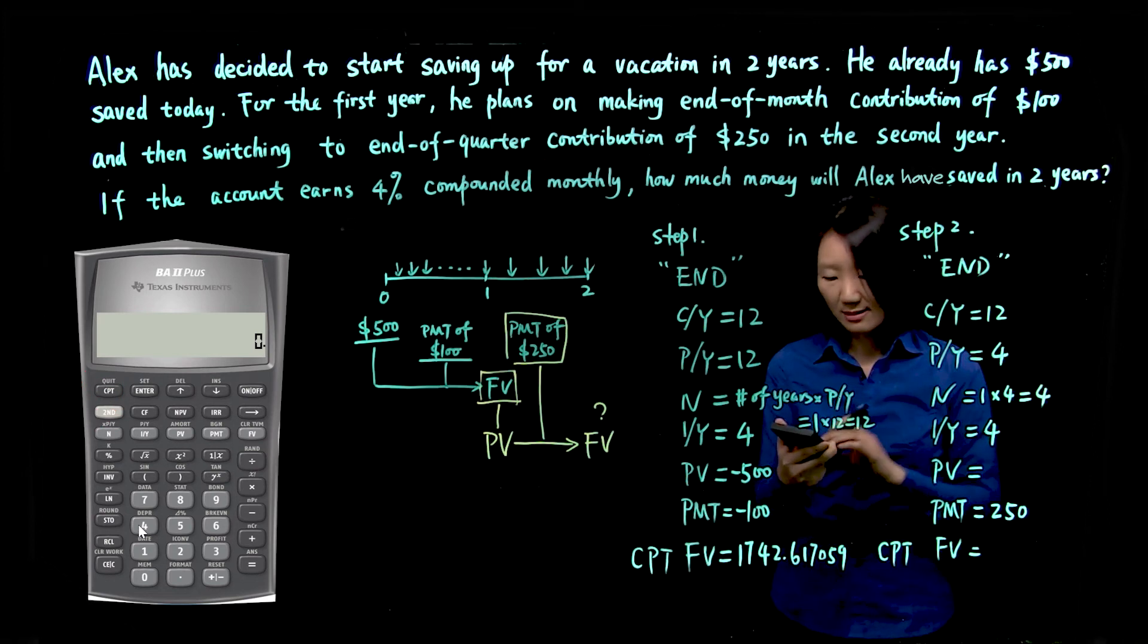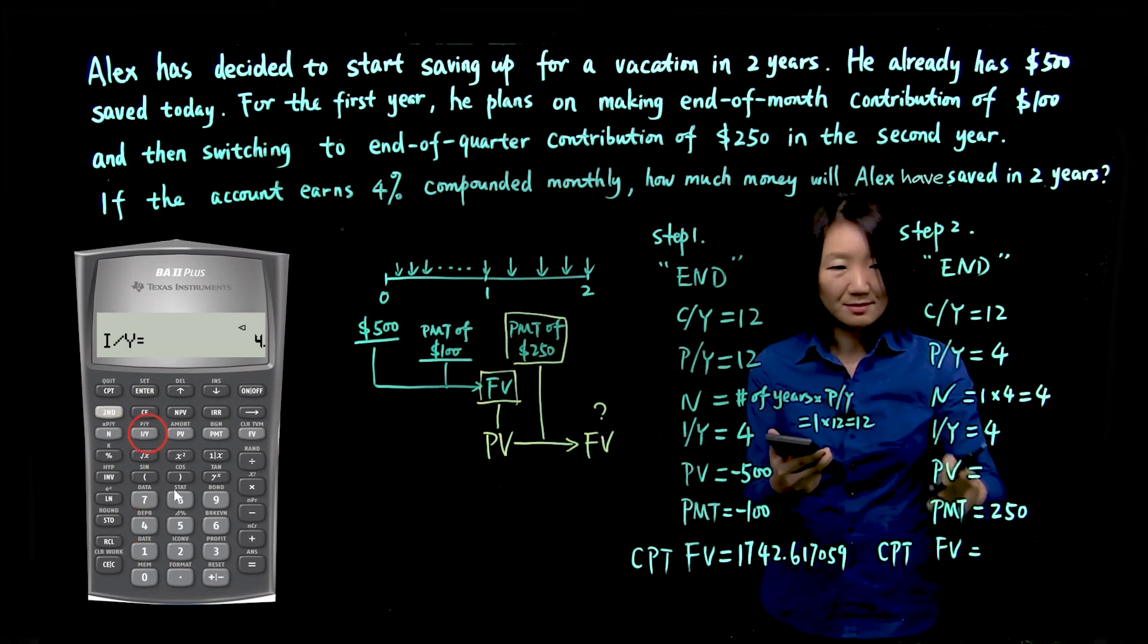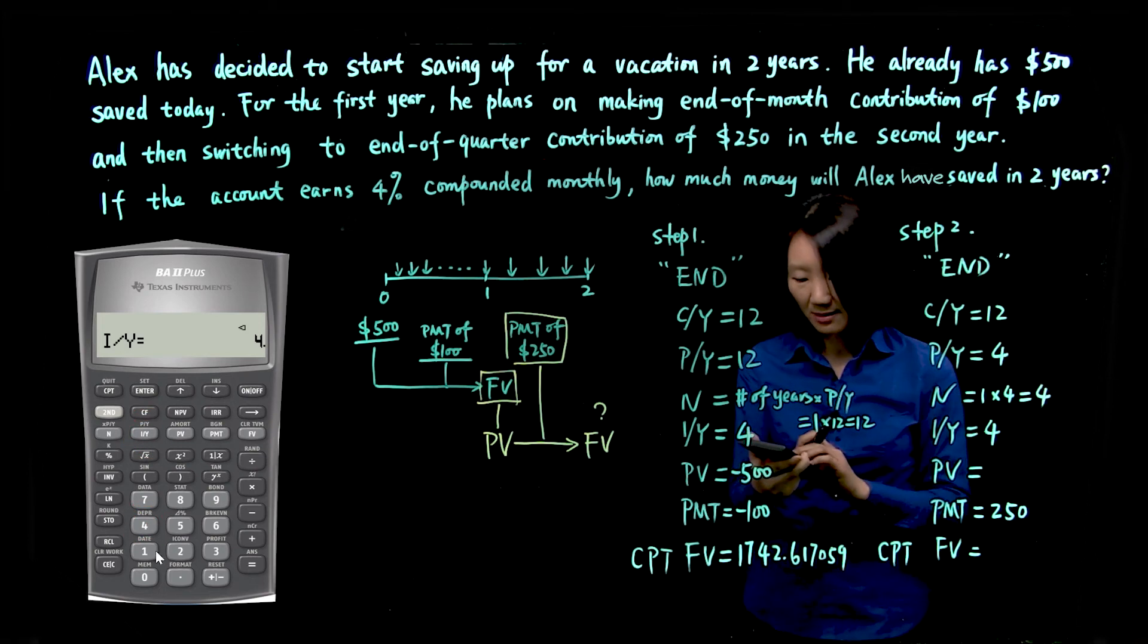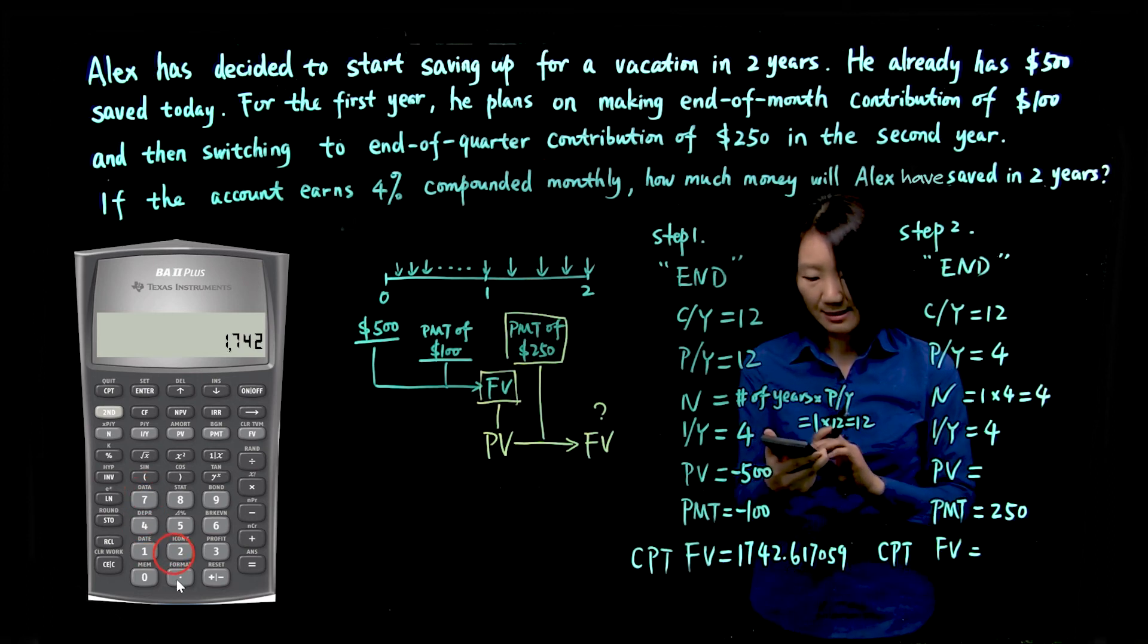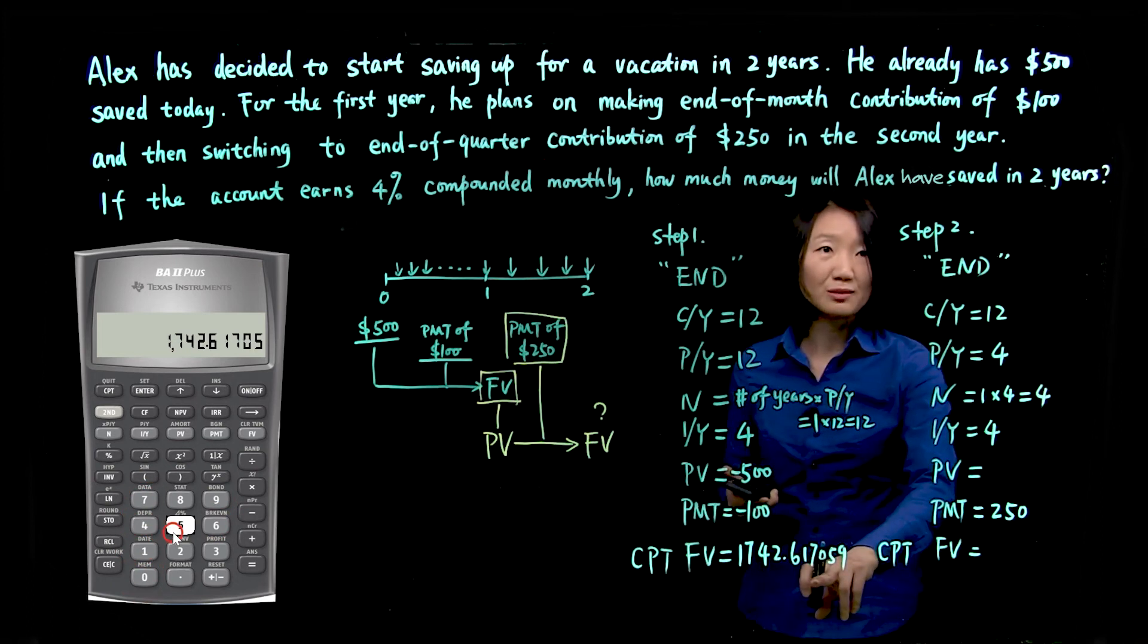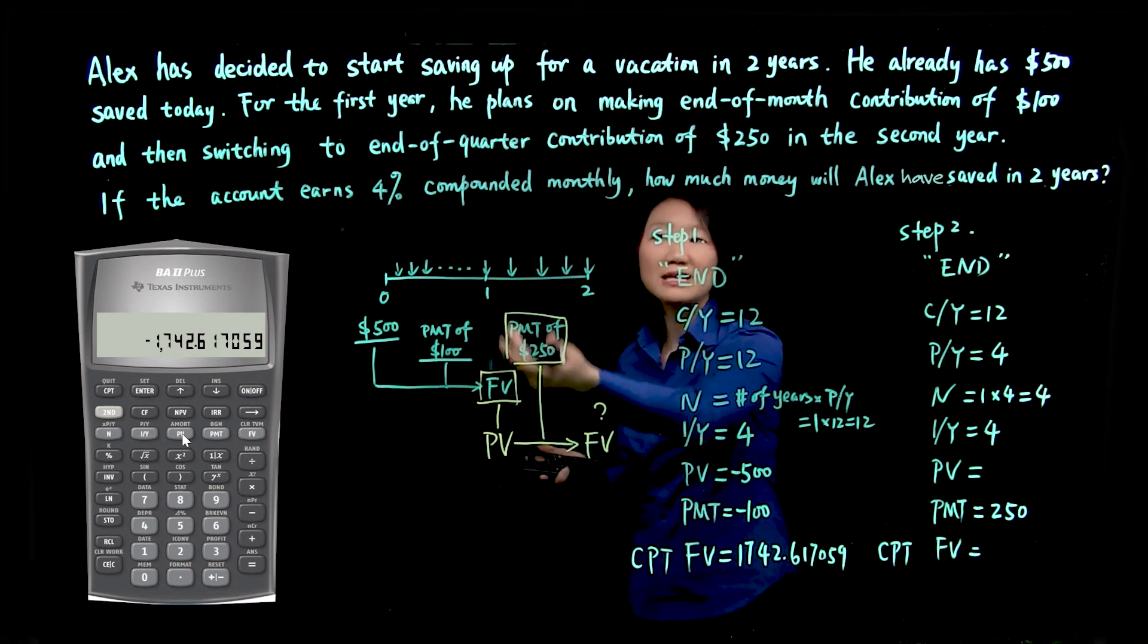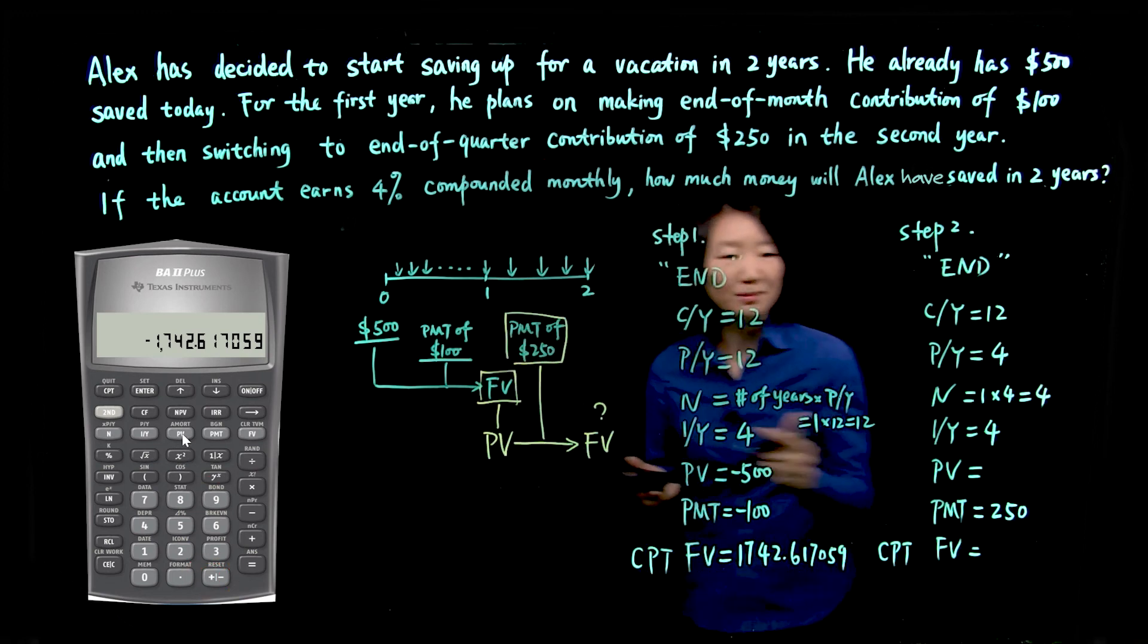Now, N is 4, so 4 for N. Interest rate the same. And PV is this new value, 1742.617059. Now, you may change that number to negative, because you can consider that money as, again, you invest money into bank.